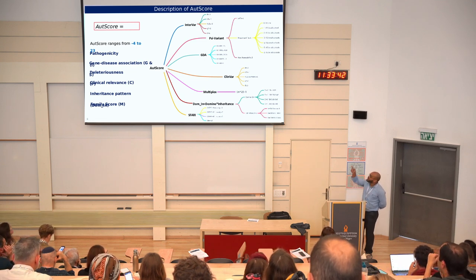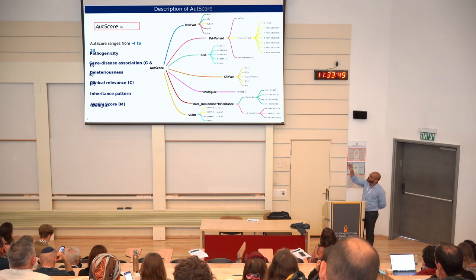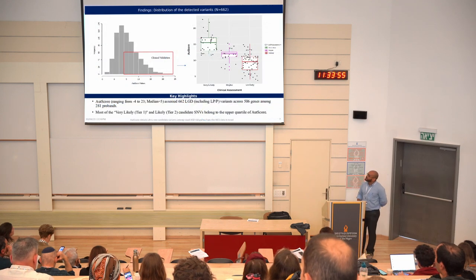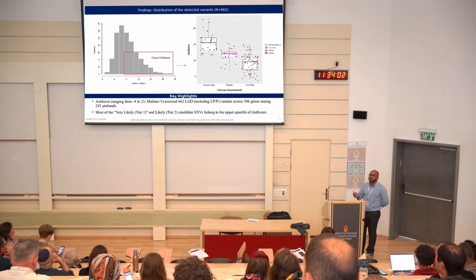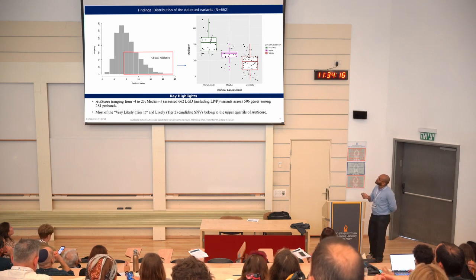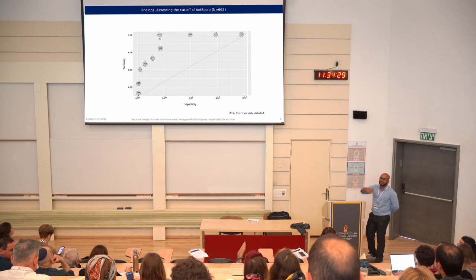By combining all those modules, we got summarized scores and implemented them on our outputs. The score ranges from minus four to thirty. After implementing those scores, we sent variants belonging to the upper quartile of all scores for clinical evaluation. Looking at the distribution after clinical evaluation, in the case of scores greater than or equal to ten or eleven, most of these particular variants are ASD-relevant. So higher the score value, better the relevance for ASD.